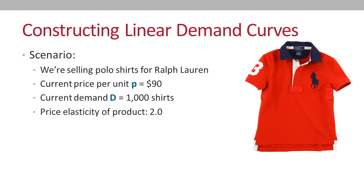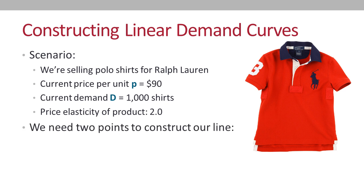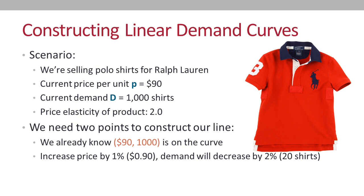Let's pretend we work for Ralph Lauren and we're selling polo shirts for $90. At the current price, demand is 1,000 units and price elasticity is 2. To construct a linear curve we need at least two points. We know that when P is $90, D is 1,000 units. Since price elasticity is 2, if we increase the price by 1% (or $0.90), demand decreases by 2% (about 20 shirts). So our second point is P = $90.90 and D = 980 shirts. Let's enter our two points into an Excel worksheet and create a scatter chart.